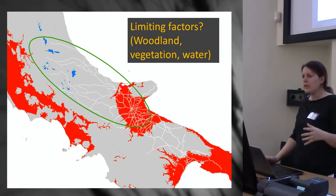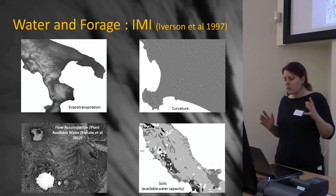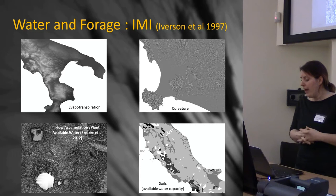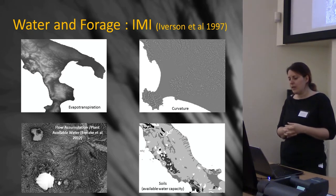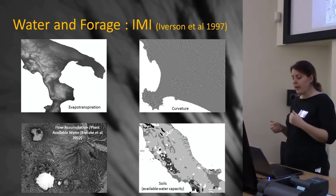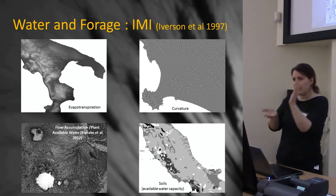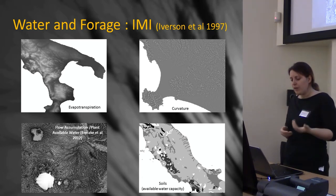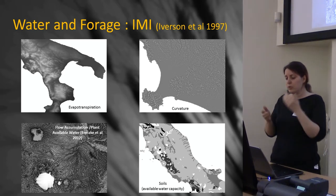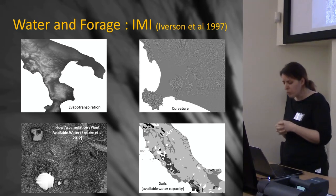I was thinking about broadening this out and looking at vegetation and water. I came across the Integrated Moisture Index, which is from 1997, which originally took hill shade as a proxy for evaporation, curvature to see where water would collect, flow accumulation, and available water capacity of the soils themselves — and then integrated these to determine which areas would have the most water.